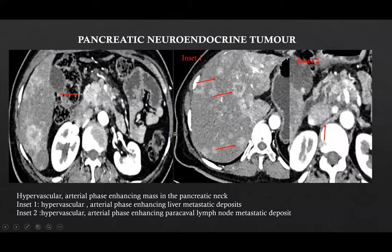This was a case of pancreatic neuroendocrine tumor where we can see a hypervascular enhancing mass in the arterial phase in the pancreatic neck. This was also associated with multiple hypervascular enhancing lesions in the liver as well as a paracaval lymph node metastatic deposit.